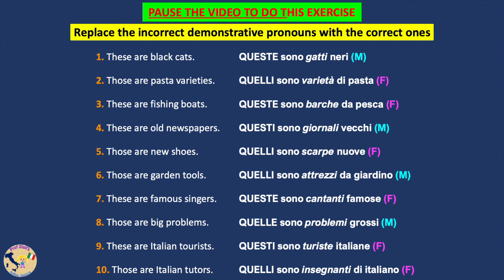Now pause the video, read each sentence carefully to spot any incorrect plural demonstrative pronouns, then rewrite the sentences correctly. Make sure the grammatical gender of each demonstrative pronoun matches that of the noun it refers to. These sentences do not include plural partitive articles. Once you are done, resume the video to check the answers.